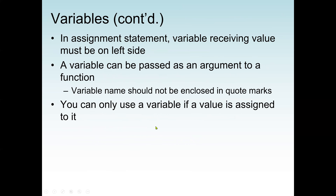In an assignment statement, the variable receiving the value must be on the left side. A variable can be passed as an argument to a function. Variable names should not be enclosed in quotation marks — if we do that, the variable name becomes a string. If we put 'age' in quotes inside print, it prints the word 'age'. Without quotes, it prints the content of the variable.